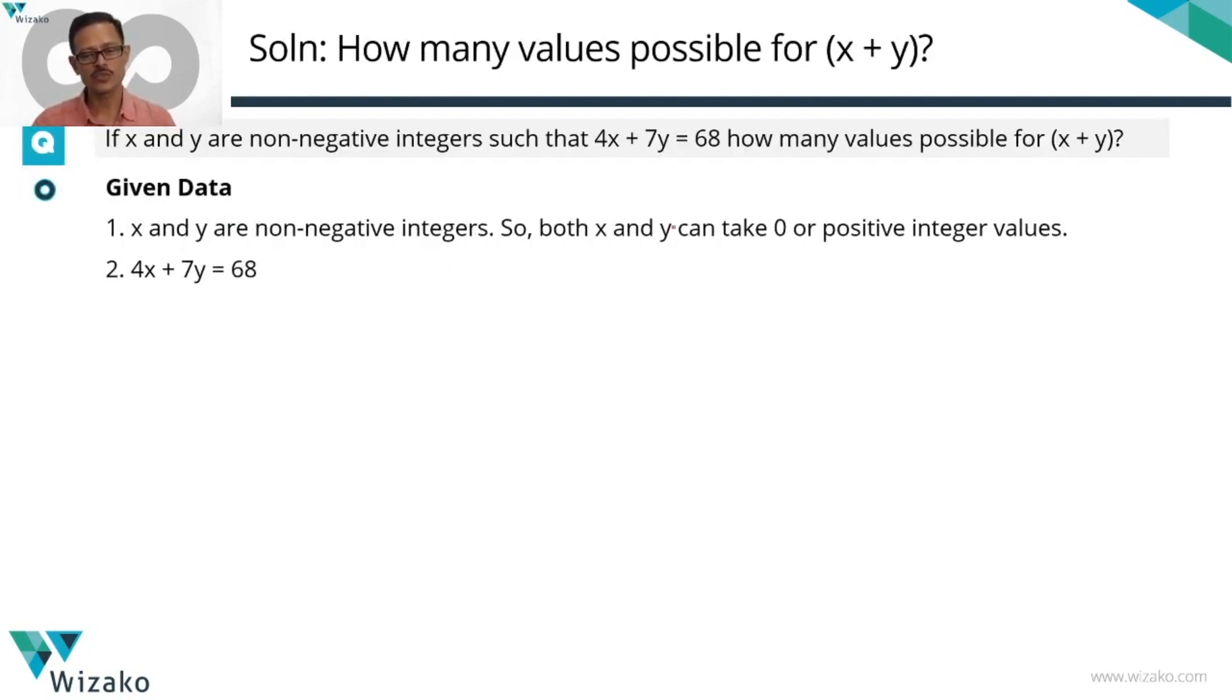x and y are non-negative integers. So x and y can both be 0 or can take positive integer values. We have 4x plus 7y equals 68. I'm going to start with this constraint. Let's rewrite it. Let's write 4x is equal to 68 minus 7y.